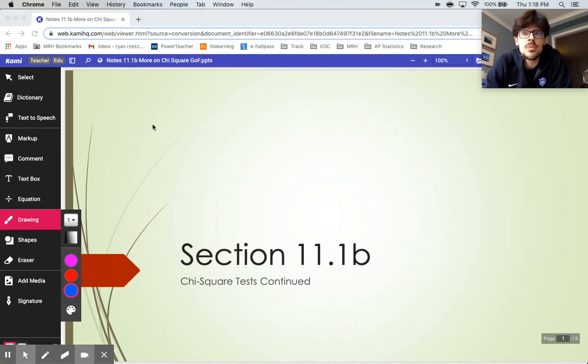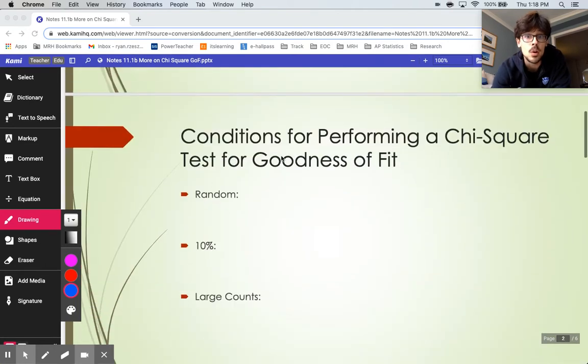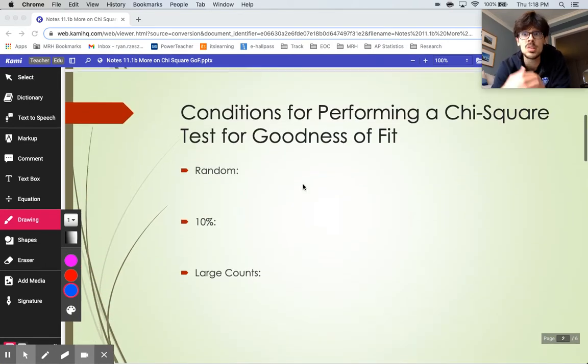All right, so in this video we finish up our discussion on the chi-square goodness of fit test. A goodness of fit test is used when you have one categorical variable with more than two possibilities, and you're trying to see if your variable matches what you think is already true or the established truth in a situation. There are going to be four steps for these, just like there have been for all the other problems, and you'll check your conditions like we usually do.